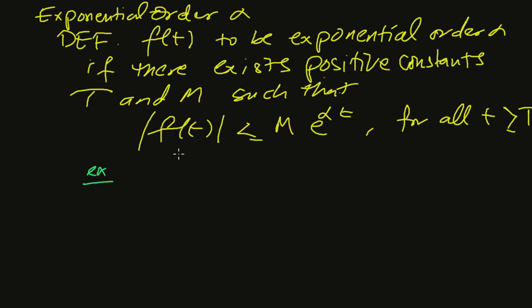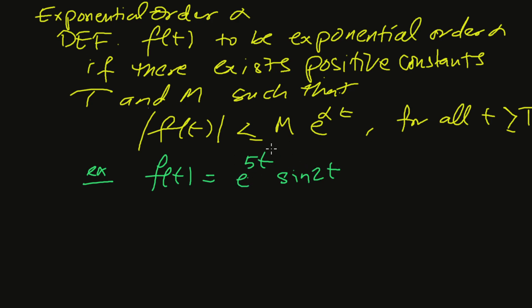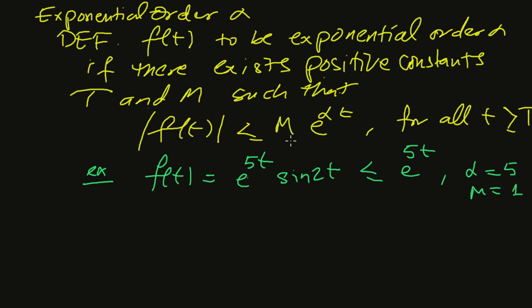A quick example: look at the exponential function e to the 5t. By examining this, it is less than or equal to e to the 5t, which gives alpha equal to five and M equal to one at the front, based on the form.